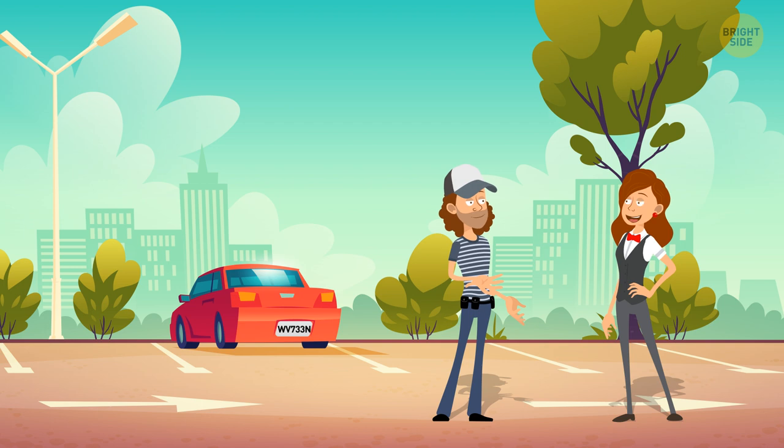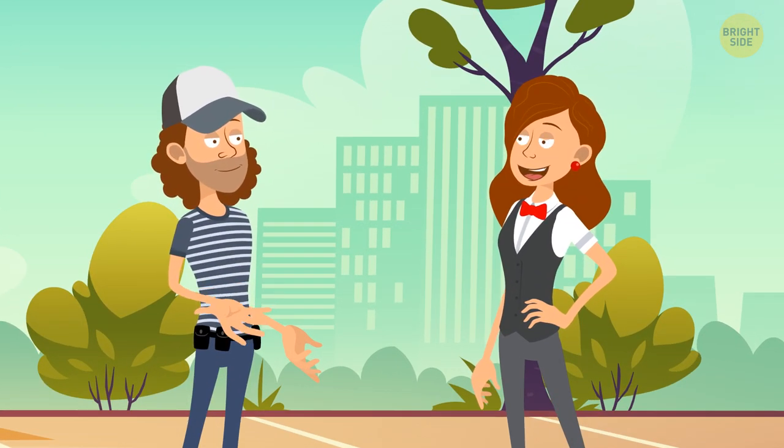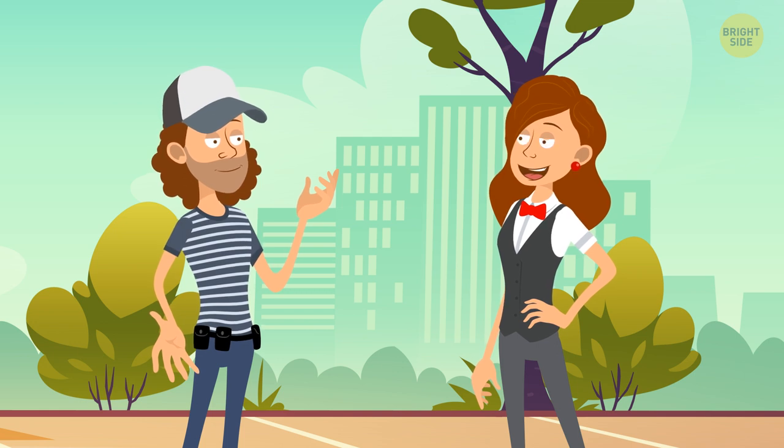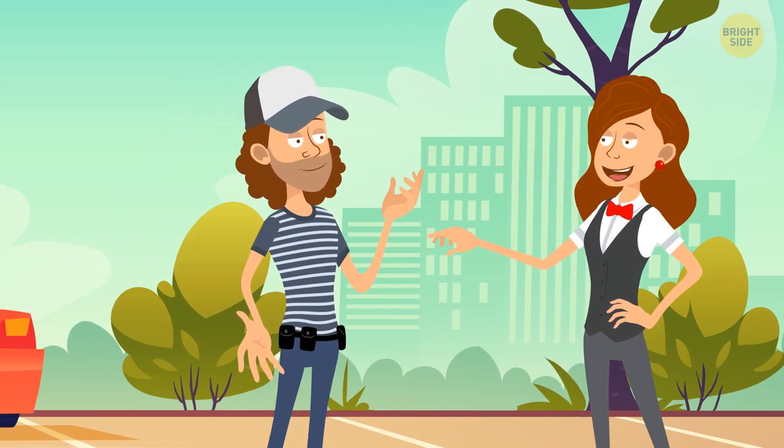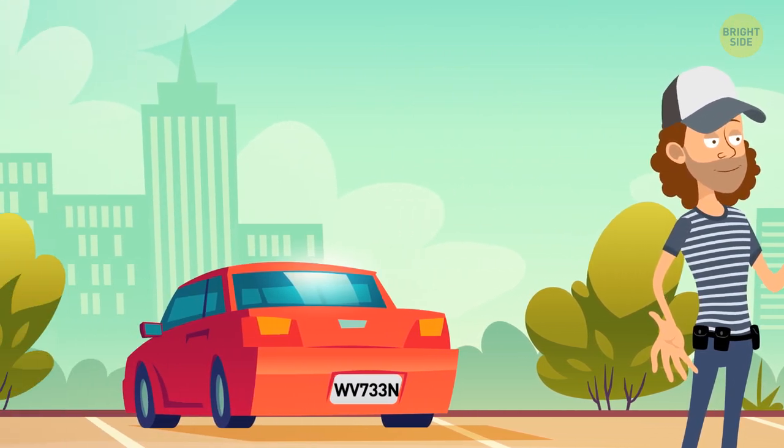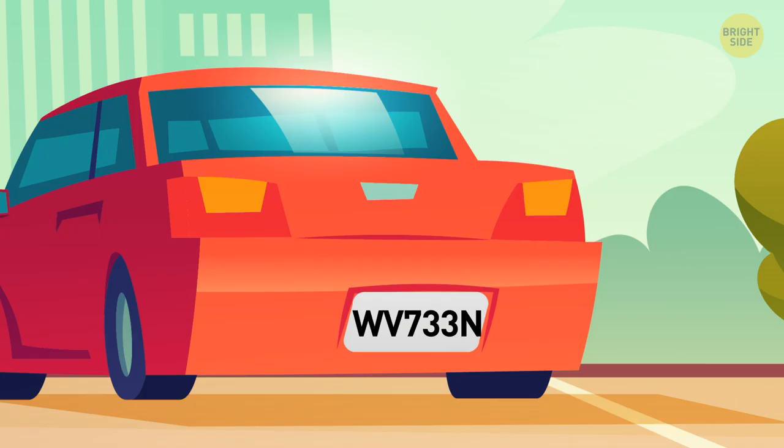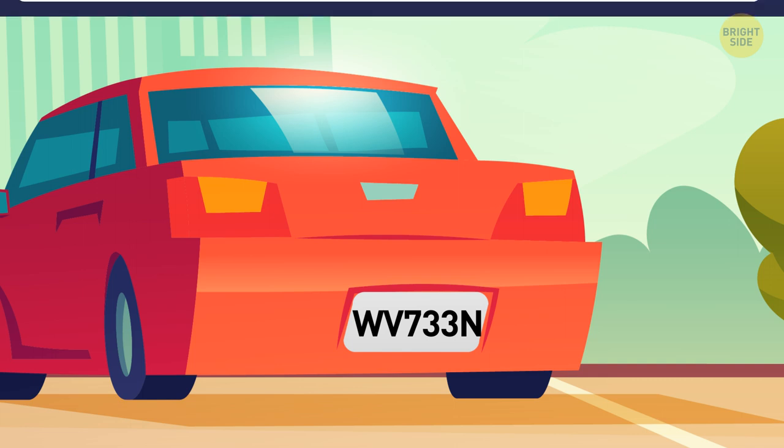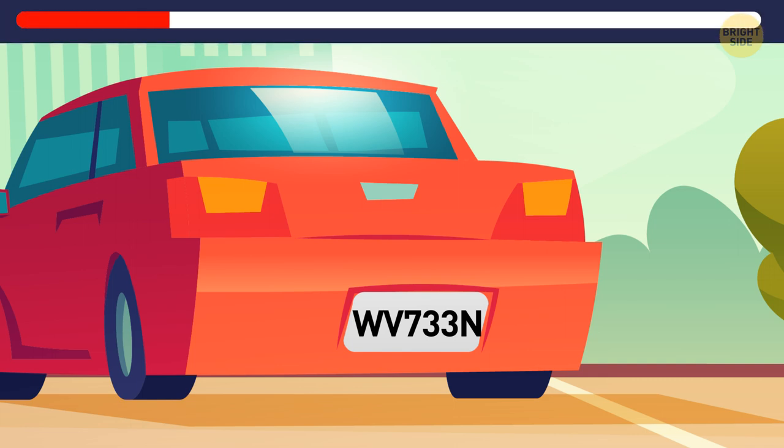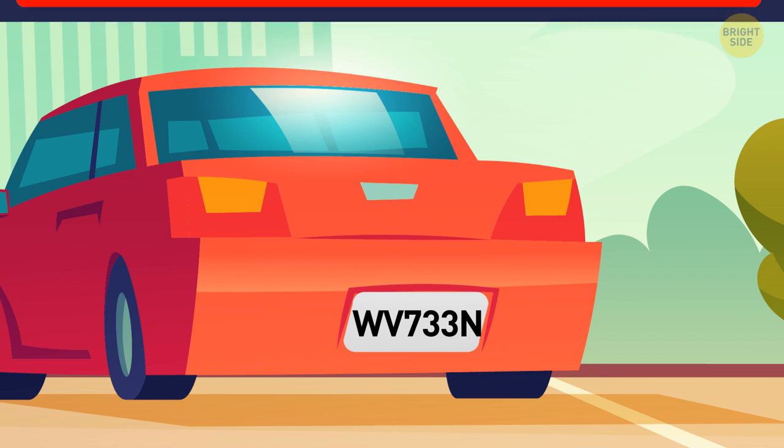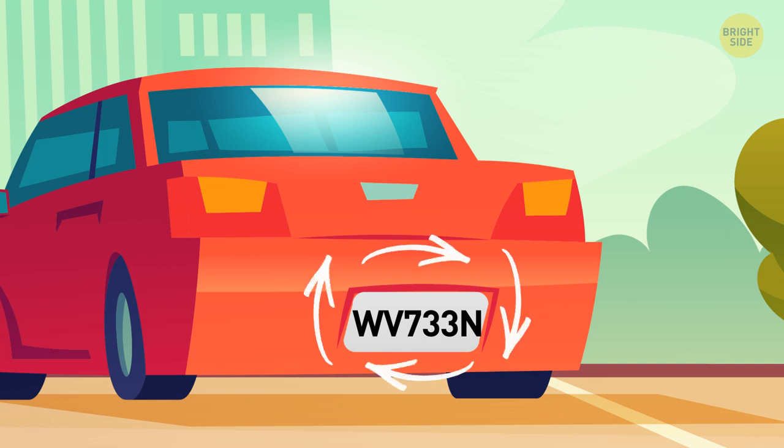Jim met this pretty woman in his favorite park. After having a pleasant conversation with her, he asked, what's your name? She told him that her name was hidden on the license plate of her car. Here it is. W-V-7-3-3-N. Can you figure out the woman's name? Look at the symbols upside down. The lady's name is Neelam.